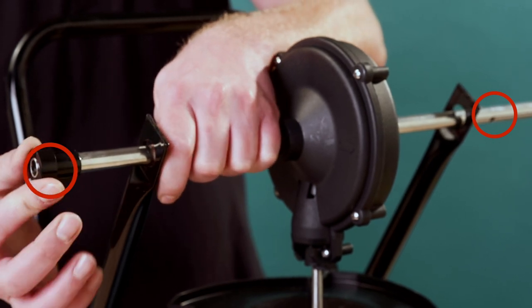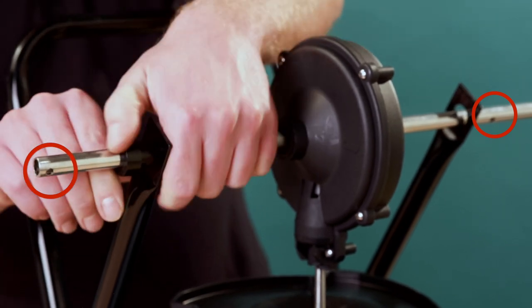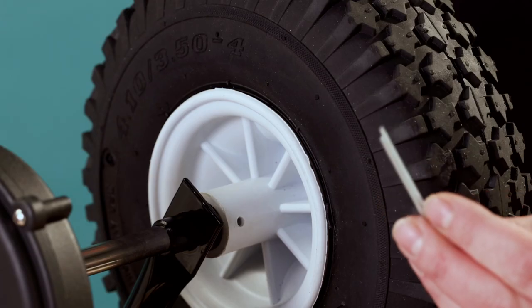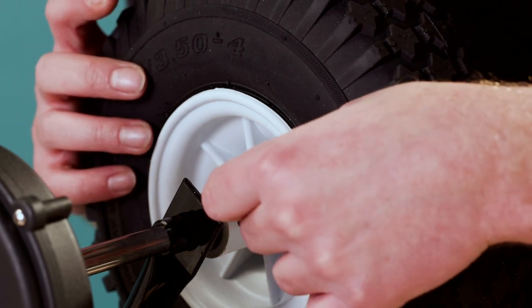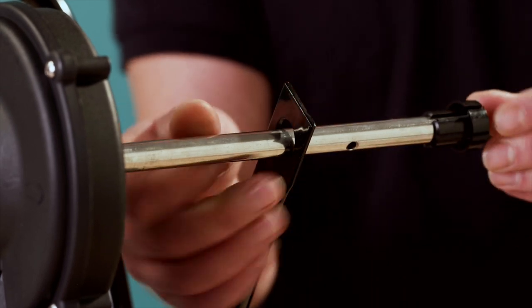There are two holes on the axle. One hole is closer to the middle of the axle and the other hole is closer to the edge of the axle. When assembling the wheels, one wheel will be pinned on the inside and the other will be pinned on the outside of the wheel.